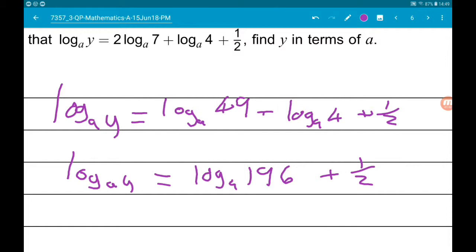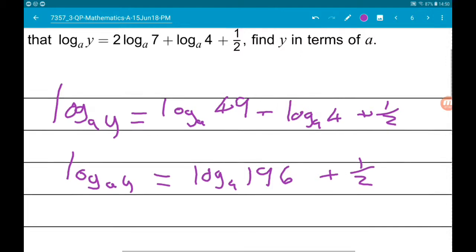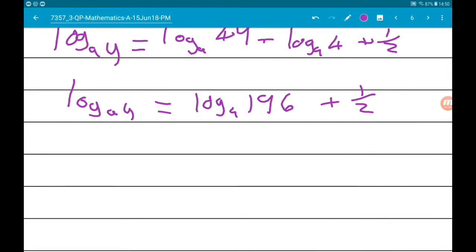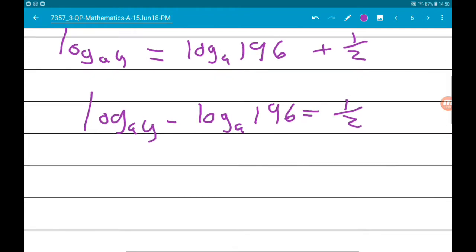Okay, so to get rid of the logarithms we're gonna at some point have to exponentiate both sides. We can't do that at the moment because we have that one half on the right. What we can do is get the logs on the same side, so we're gonna subtract log 196. So we get log of y minus log 196 equals a half. Combine the logs, and log of y over 196 equals a half.